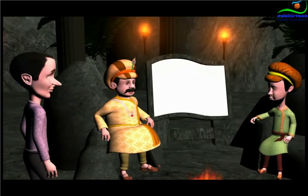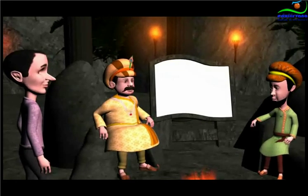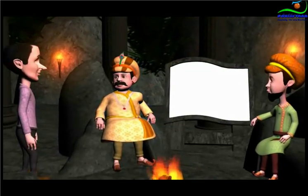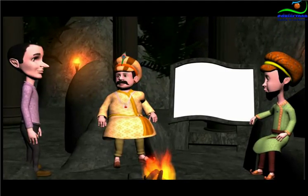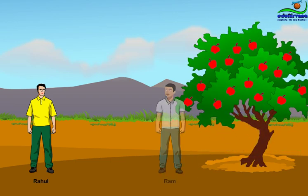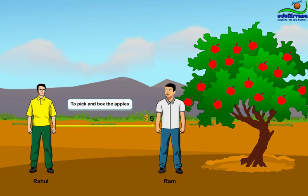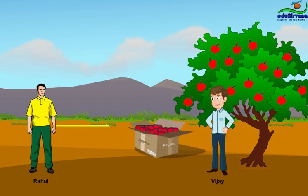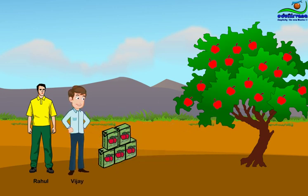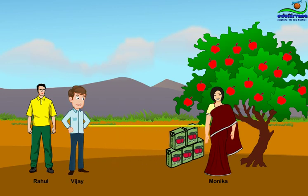Can you please explain by taking a simple example? For sure. Consider a simple economy in which one good is produced and sold. Rahul finds an apple seed and plants it. In some years, an apple tree appears. Rahul pays Ram $1.05 in wages to pick and box the apples. Next, Rahul sells the apples to Vijay for $8. Vijay turns the apples into apple juice and sells the apple juice to Monika for $10.